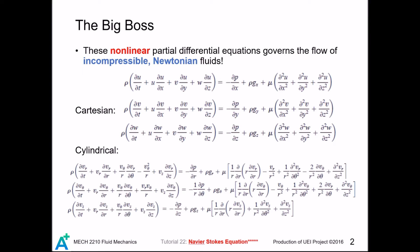We can retrieve what we have learned in the previous chapters from the Navier-Stokes. For example, if the flow is inviscid, we can take the viscosity at zero. This term here is in fact the acceleration, so we can write the resulting equations in a compact form, which is the governing equation you have learned in chapter 2.